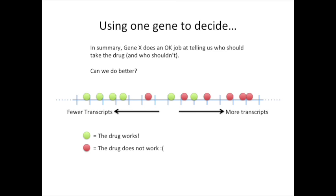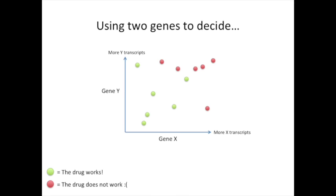What if we used more than one gene to make a decision? Here's an example of using two genes to decide who gets the drug and who doesn't. On the X axis we have gene X, and on the Y axis we have gene Y. Now that we have two genes, we can draw a line that separates the two categories: the green, where the drug works, and the red, where the drug doesn't work. And we can see that using two genes does a better job separating the two categories than just using one gene. However, it's not perfect.